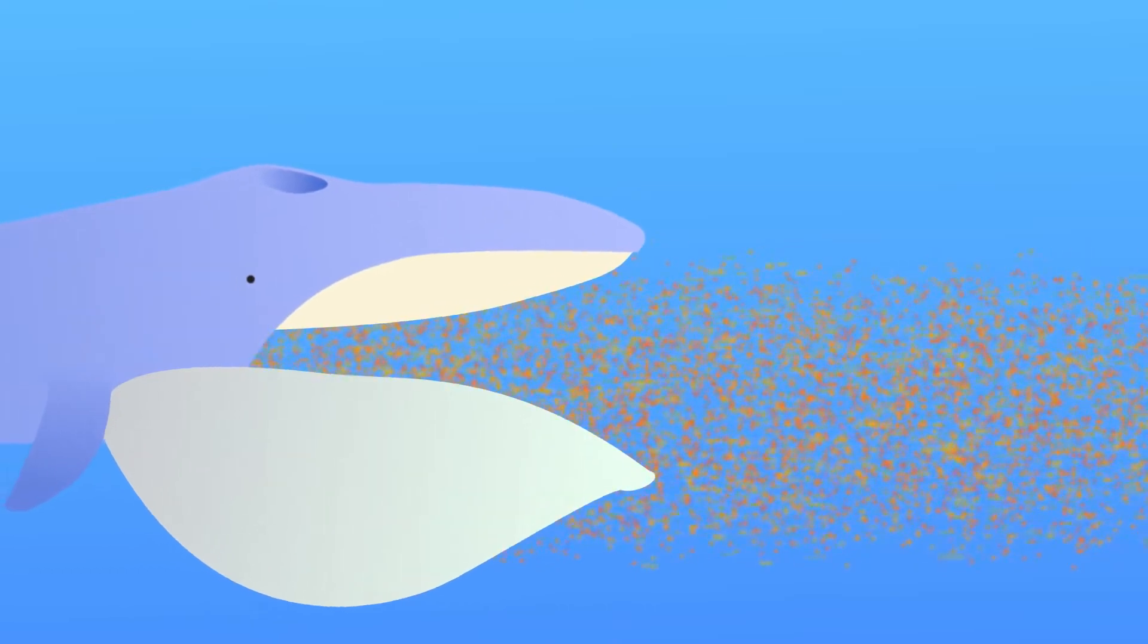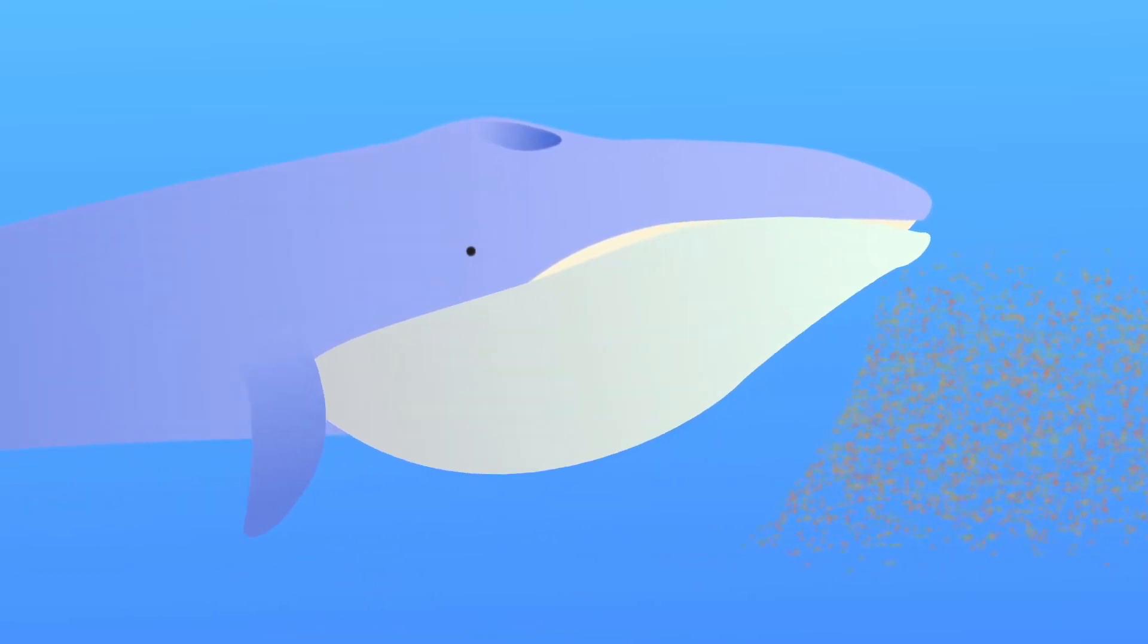When a blue whale finds a swarm of krill, it opens its giant mouth and engulfs the entire swarm. It has a pleated throat that can stretch out to allow the whale to hold all the krill in its mouth.